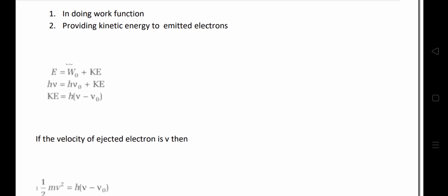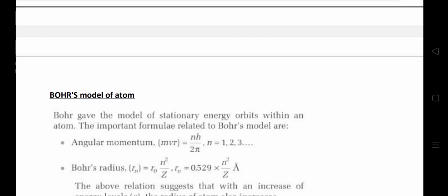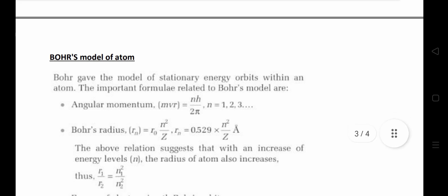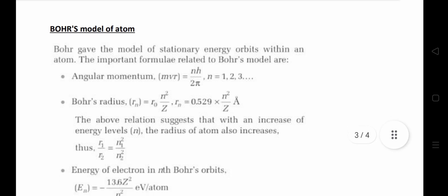The velocity of the ejected electron can be calculated from its kinetic energy: half m-v-squared equals h times (mu minus mu-naught). This is the most important topic from the examination point of view — the Bohr model of atoms. So many questions have been asked from this topic in UGTRB, PG, and polytechnic exams. Bohr gave the model for stationary energy orbits within the atom, and it is better to note down all these formulas. Simple direct calculations from these formulas can appear in exams — for example, angular momentum.